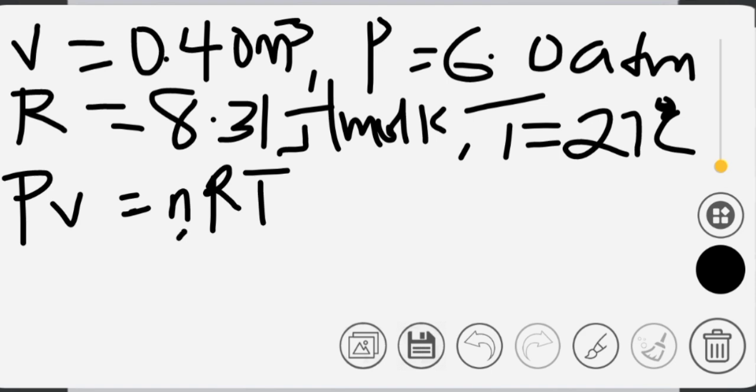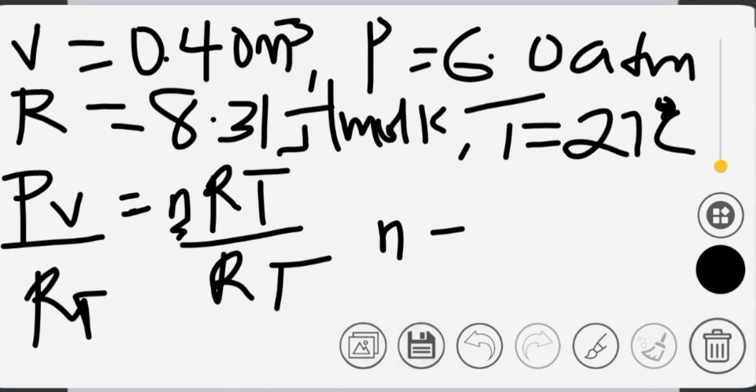If you want to isolate the formula, you divide by RT. So that the number of moles will be equal to PV over RT. We know V, we know P, we know R, we know T.